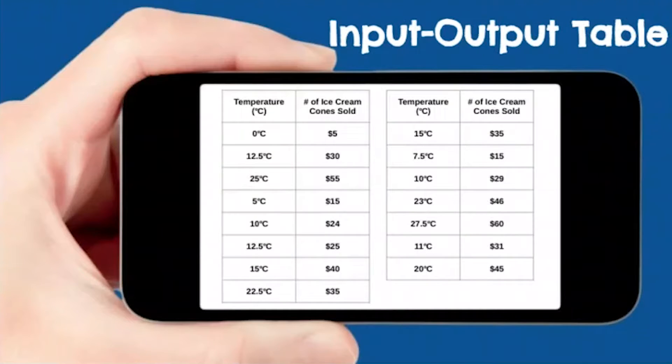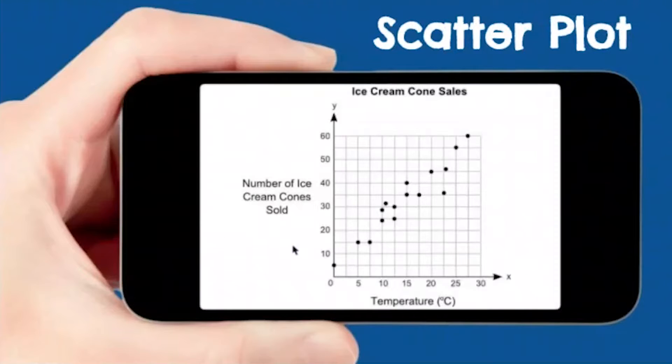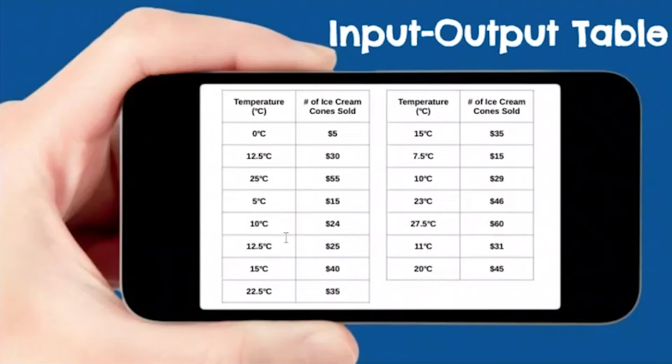It is also related to input-output tables. Just like when we did coordinate graphs, you can use an input-output table. These dots represent all the data points. You have your x and your y. Your input-output tables could be horizontal as well. The temperature represents the x-axis, and these represent the y-axis.